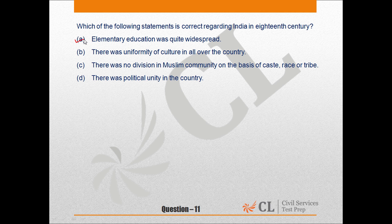There was no cultural and social uniformity in India in the 18th century. The Muslim community was also divided on the basis of caste, race, tribe, and status. There was a large number of autonomous states during that era. So the correct answer is option A. Now for our Hindi students.